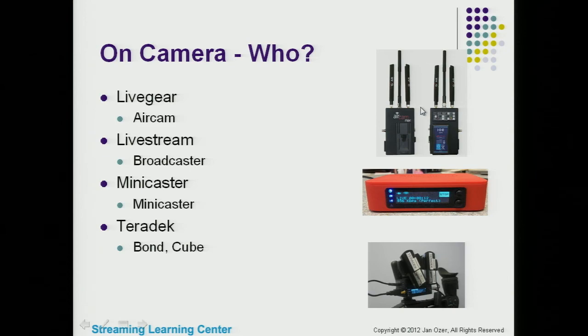What does 4G aggregation buy you? Three things. Number one: you can have modems from different vendors — if AT&T is doing well and Verizon is slow, you can still get your signal through. You also get aggregation — with four Verizon modems, you can aggregate to get a 4 to 5 Mbps stream out, which is really good starting quality for adaptive streams. A single 4G modem is not an industrial strength solution; you really need link aggregation if you're serious about 4G.